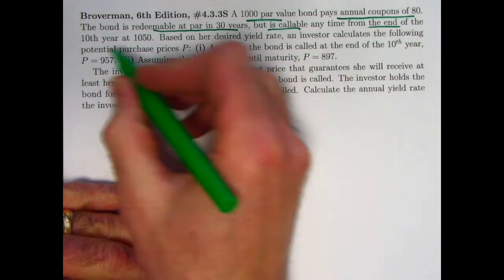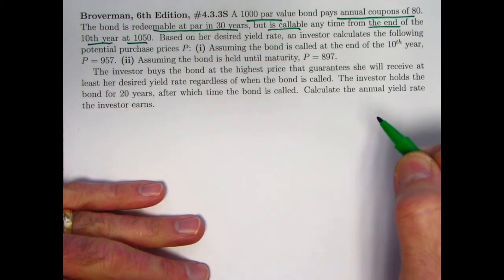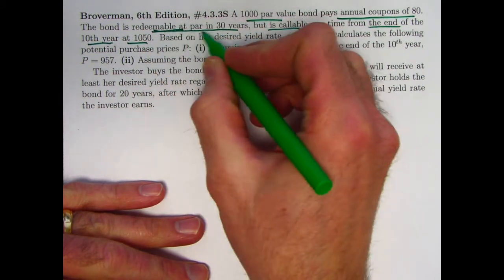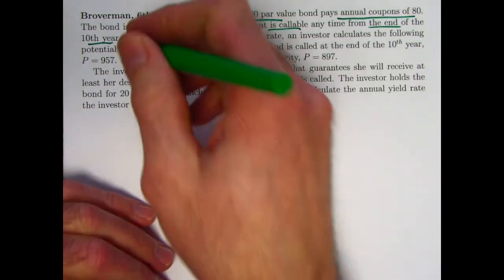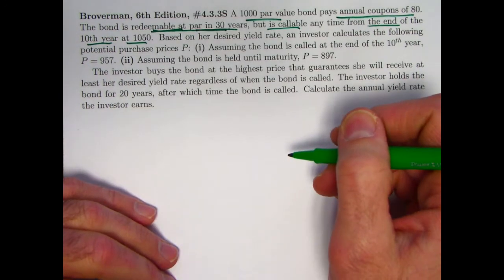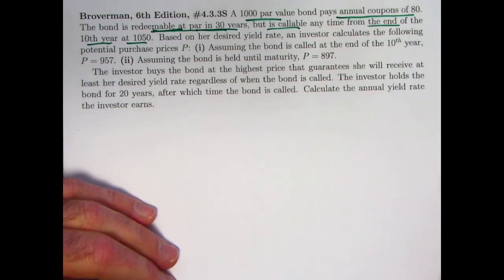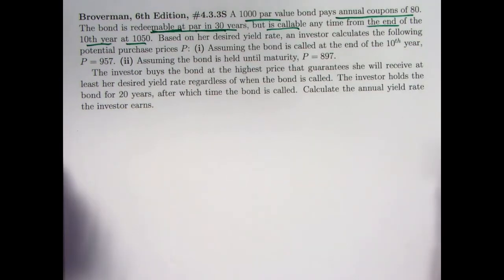anytime at the end of the 10th year at $1,050. It's redeemable at par at the end of the term if they decide to do that at the end, but $1,050 otherwise if starting at year 10. Notice these are annual coupons as opposed to the usual semi-annual coupons.